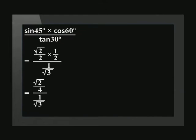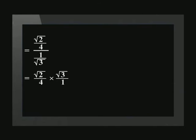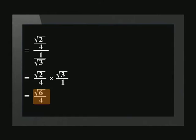That's the trig part all done. We now need to tidy up this expression and ensure we express our answer in the correct format. We multiply the fractions in the numerator and get root 2 over 4. We make this easier to work with by using tip-and-times to get root 2 over 4 times root 3 over 1. Multiplying numerators gives us root 6 and multiplying denominators gives us 4.